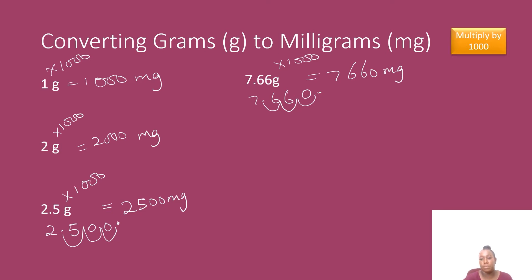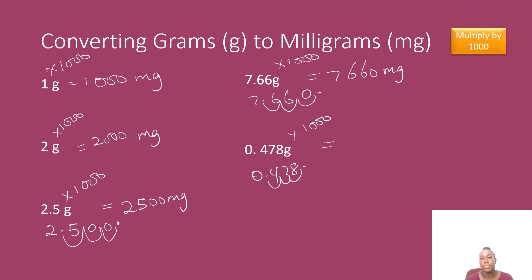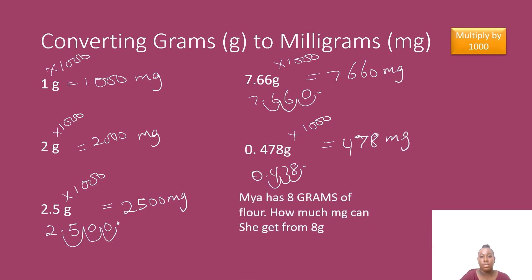Let's look at another example — I have 0.478 grams and I would like to change this to milligrams. I need to multiply by 1000. What happens when we are multiplying a decimal by a thousand? We shift the decimal point three times to the right: one, two, three. So my answer is 478 milligrams.